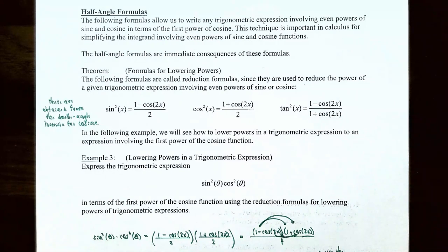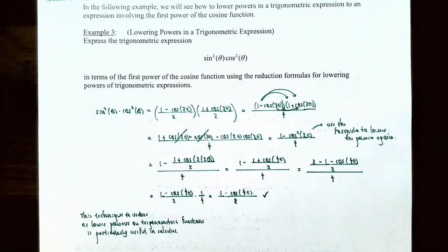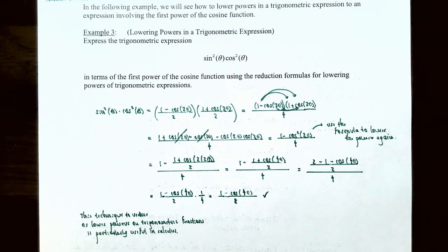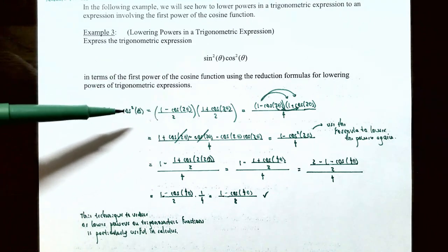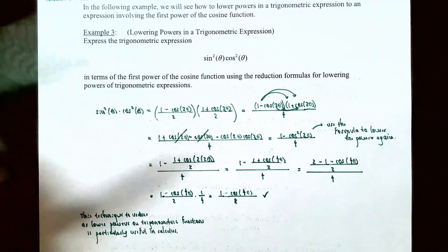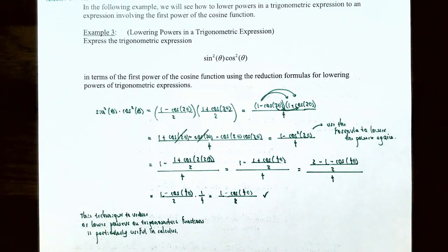In the following example we're going to show how to lower powers in a trigonometric expression to an expression involving the first power of the cosine function. Example 3: express sin²θ · cos²θ in terms of the first power of the cosine function using the reduction formulas. Sine squared of θ equals (1 − cos(2θ)) / 2 and cosine squared of θ equals (1 + cos(2θ)) / 2, both obtained from the double angle formulas.